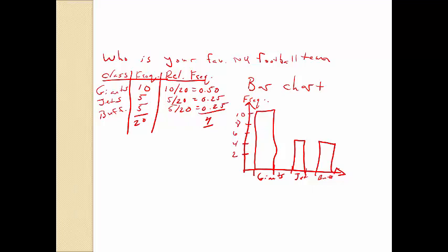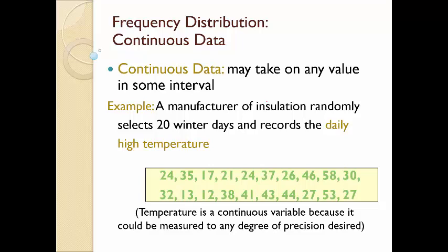This is grouping discrete data — counts — so you show it visually with a bar chart. But what happens when you have continuous data? Continuous data can take on any value in some interval — these are measurements. Here's an example: a manufacturer of insulation randomly selects 20 winter days and records the daily high temperature. Here are all the daily high temperatures for those 20 winter days.